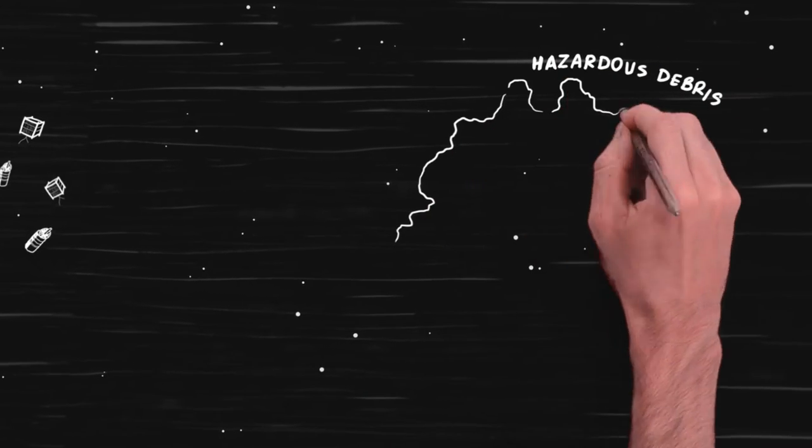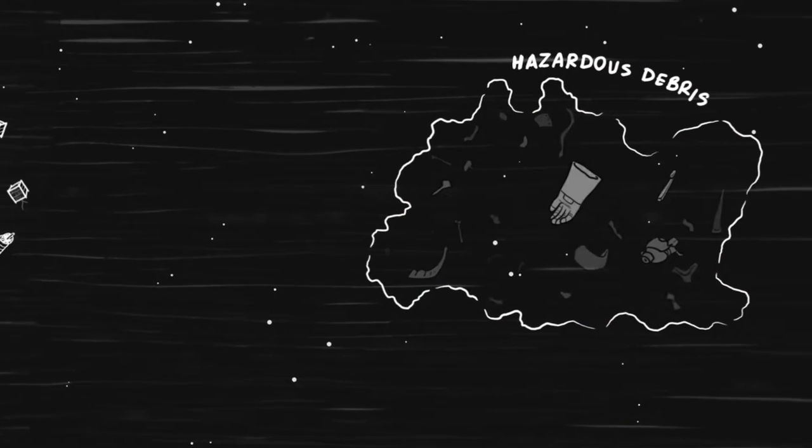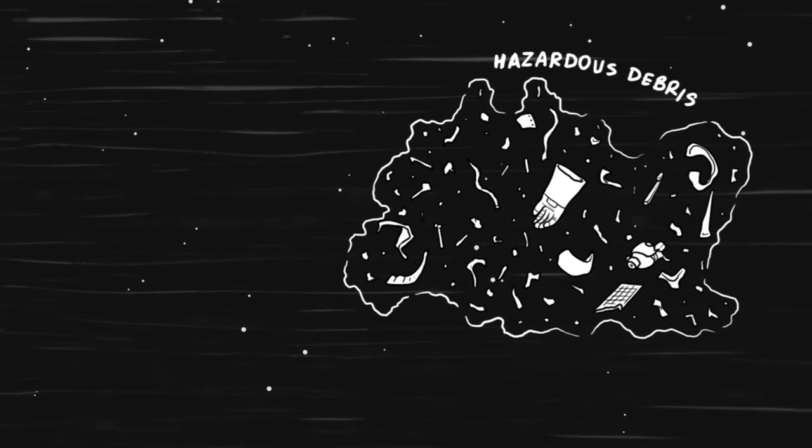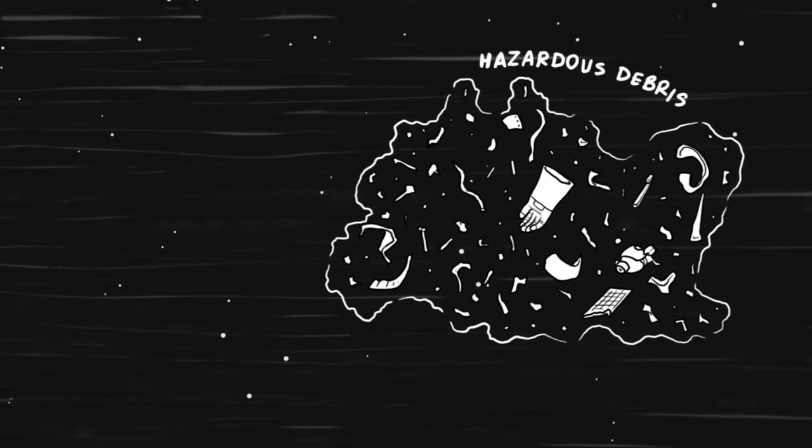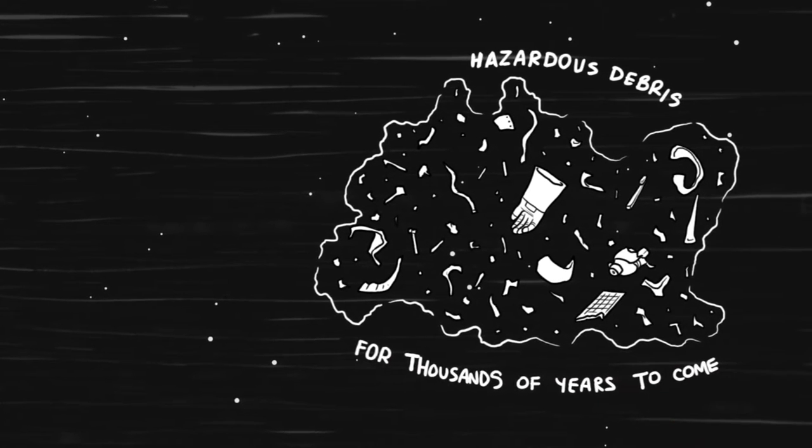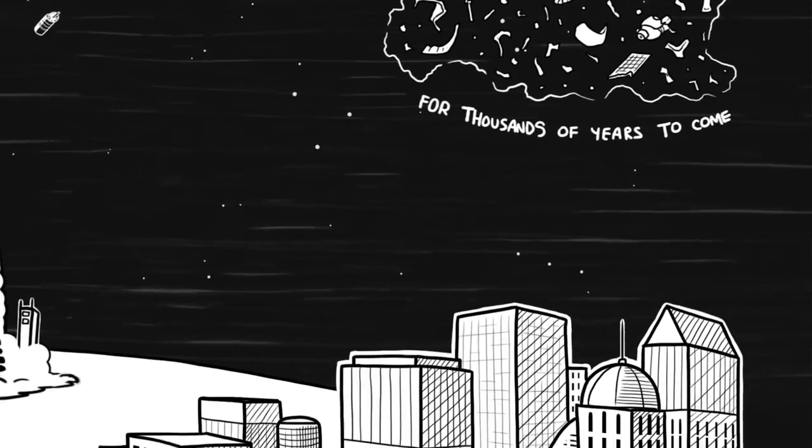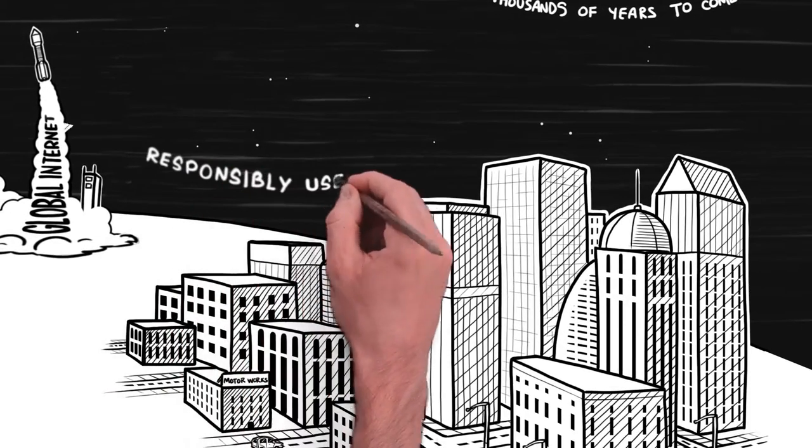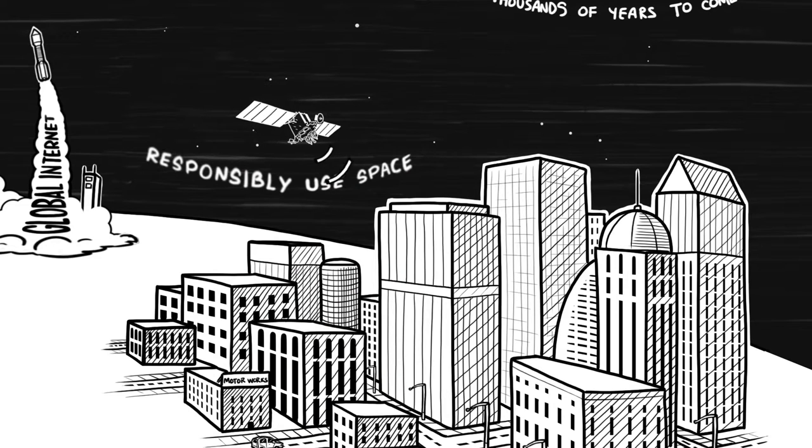This debris collects in orbit around Earth, polluting the space and endangering the safety of operational satellites, now and for thousands of years to come. We are at a critical juncture where we can choose to responsibly use space and reap the tremendous benefits, or lose this resource forever.